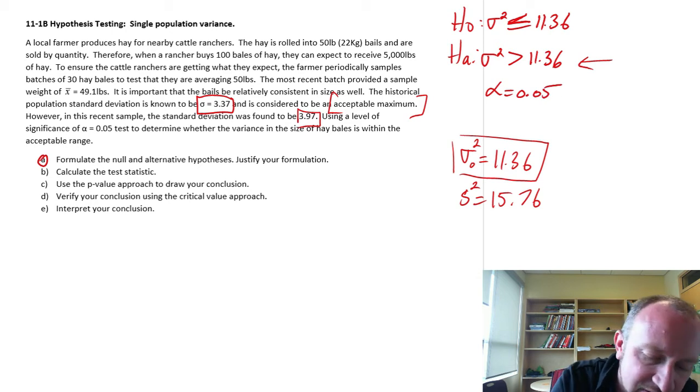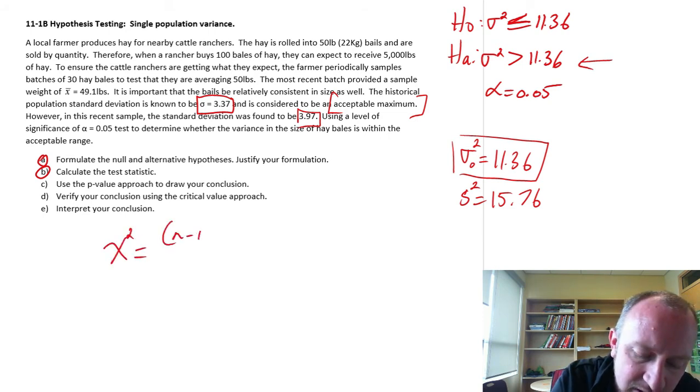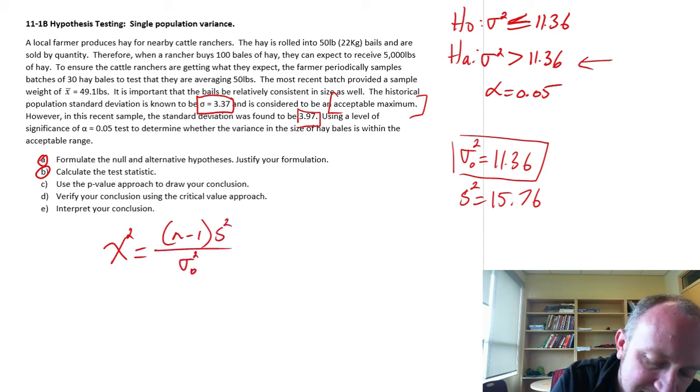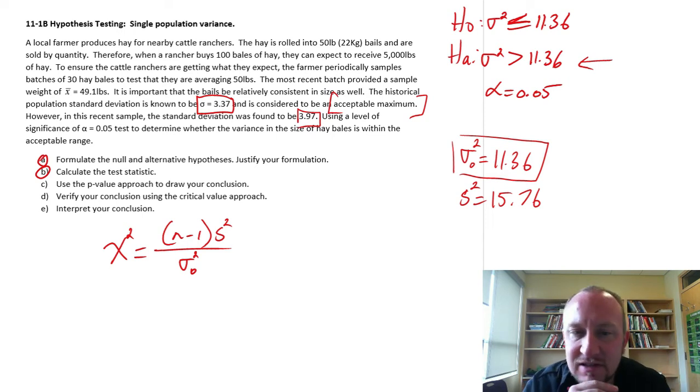Test this at the alpha .05 level of significance. We've got our level of significance. Now let's develop our test statistic. So here the formula that you're going to reach for is that chi-squared formula: n minus 1, s squared, divided by the hypothesized value, sigma squared.